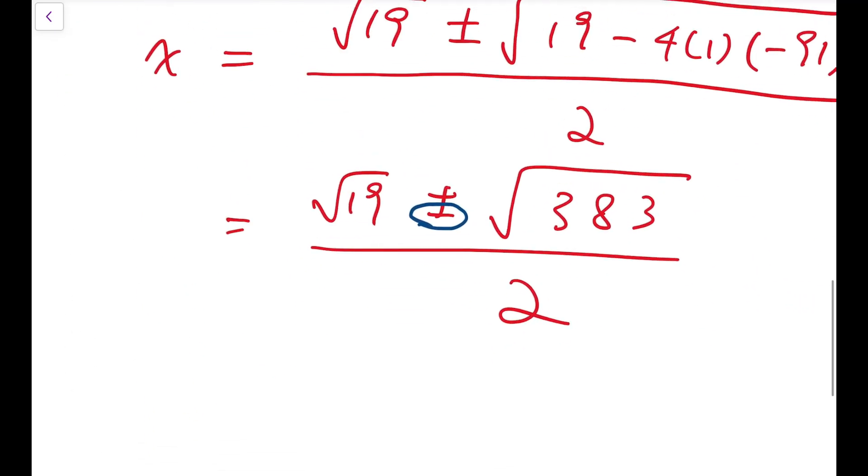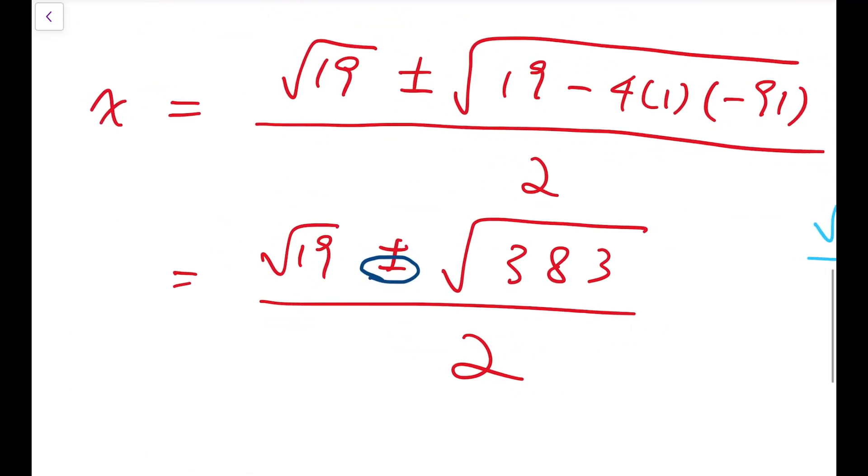So we can conclude that these two numbers, root 19 plus or minus square root of 383, are both solutions to our problem.